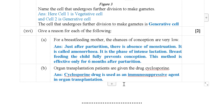Last question of Section A: Organ transplantation patients are given the drug cyclosporine. The answer is that cyclosporine is used as an immunosuppressive agent in organ transplantation. It also has anti-inflammatory properties, but in organ transplantation cases it is mainly used as an immunosuppressive agent.